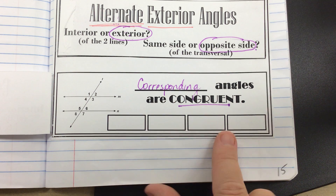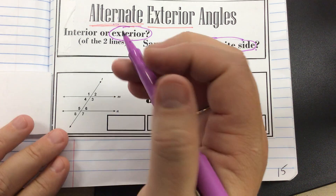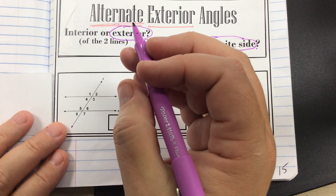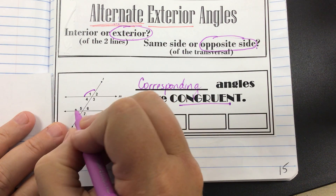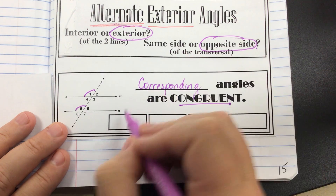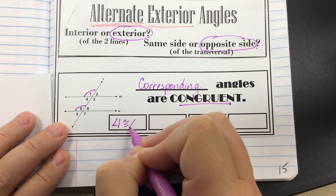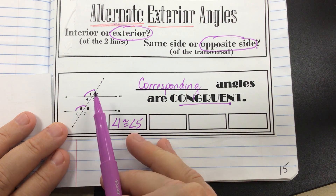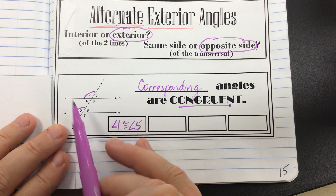So we're going to write down the congruent pairs. First, angle one is congruent to angle five. If I'm looking at it, angle one out of the top group of four is in the top left position, and angle five is also in the top left position.